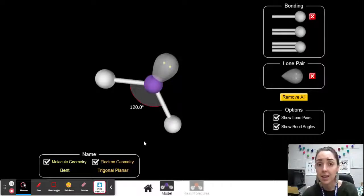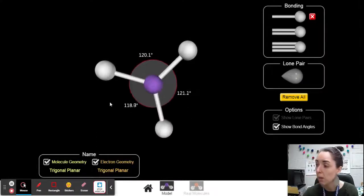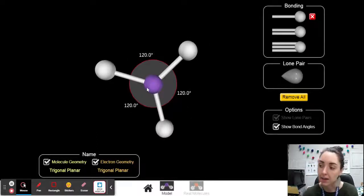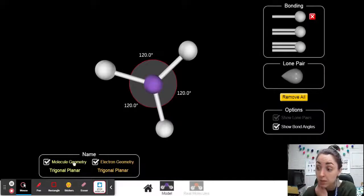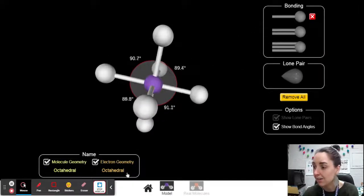So that's what we call, again, an electron domain. Electron geometry is based on electron domains. So check out the names here. I'm going to stick those bonds back in. So when I have just bonds, the molecule geometry and the electron geometry are the same.